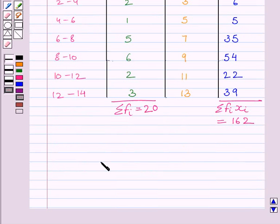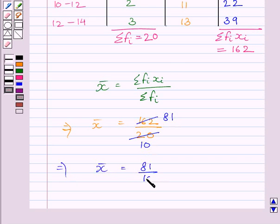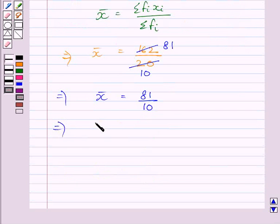Now, from key idea, we know mean is equal to summation FI XI upon summation FI. Now, substituting corresponding values of summation FI XI and summation FI in this formula, we get mean is equal to 162 upon 20. Now, we will cancel common factor 2 from numerator and denominator both. And we get mean is equal to 81 upon 10, which is further equal to 8.1.